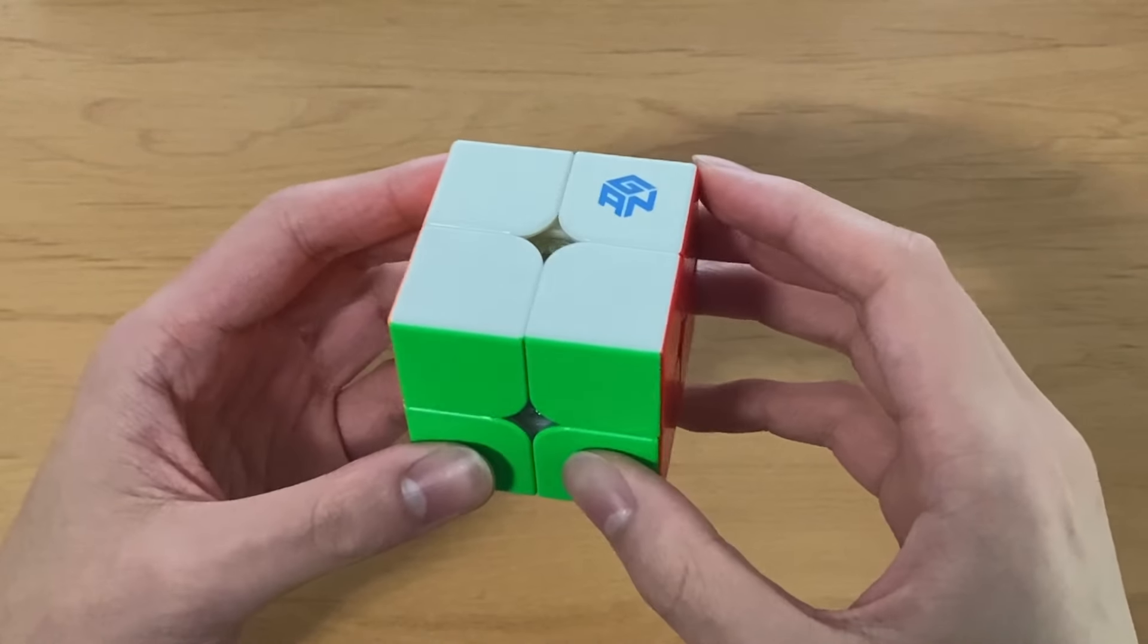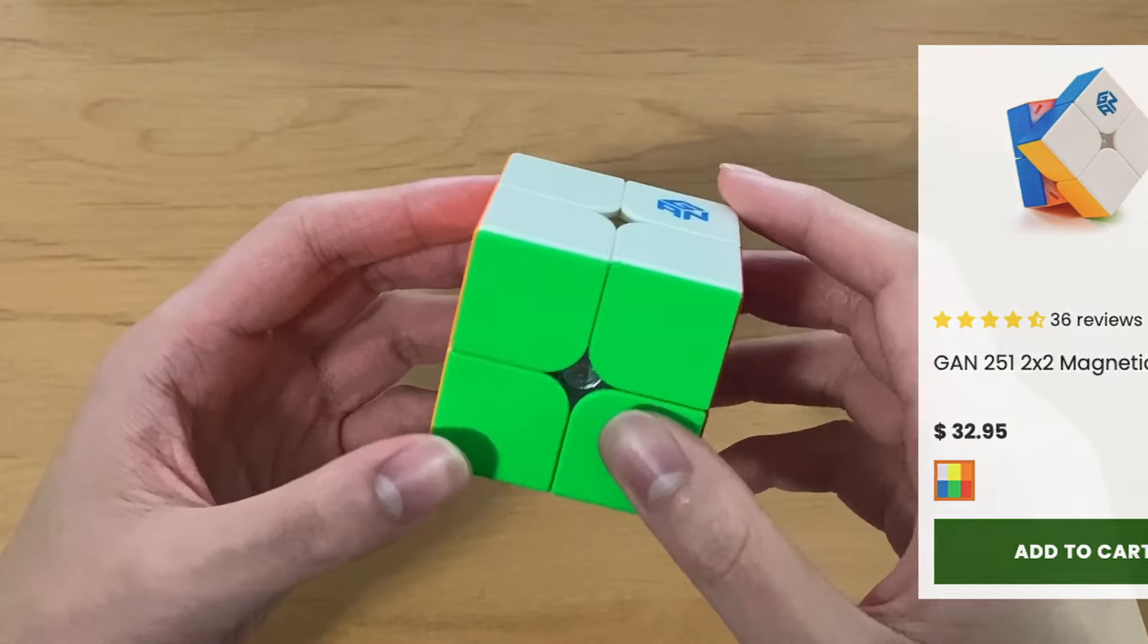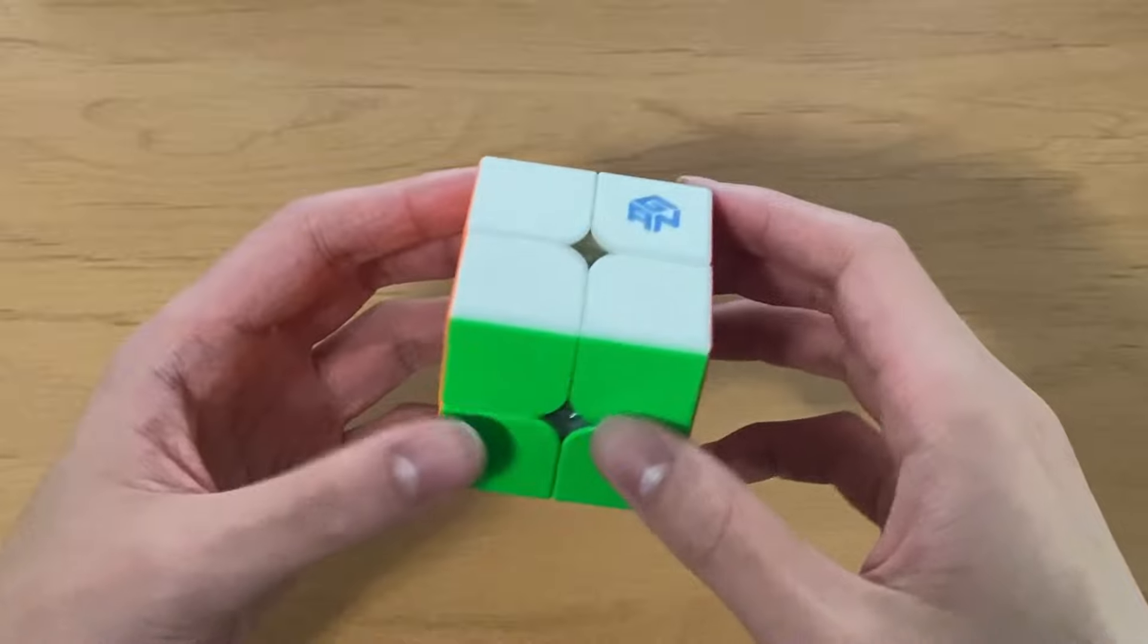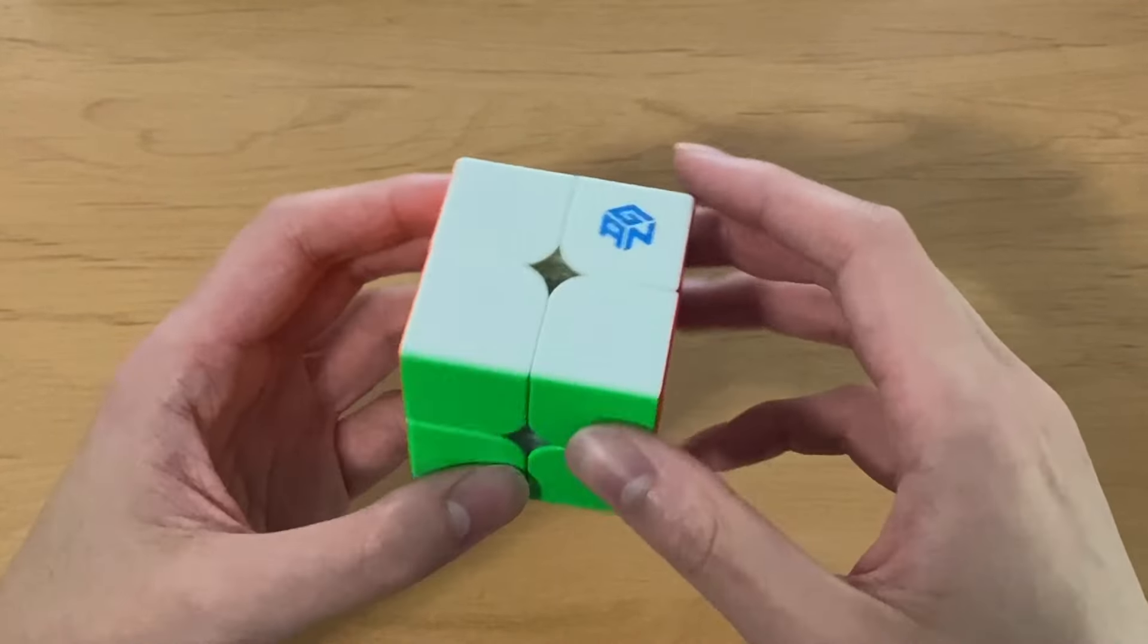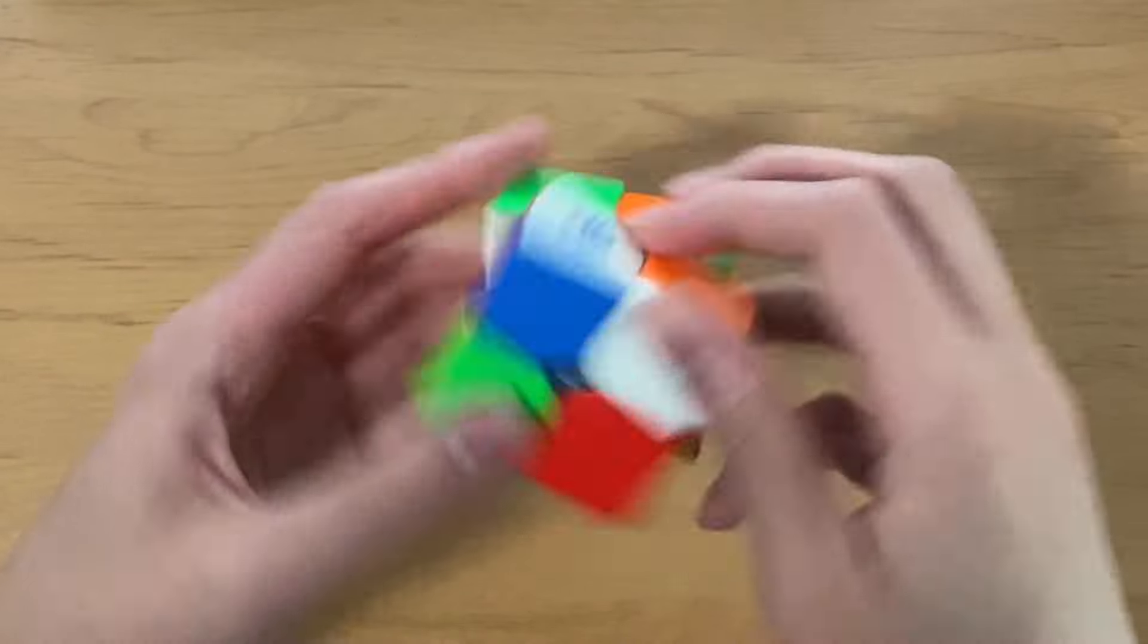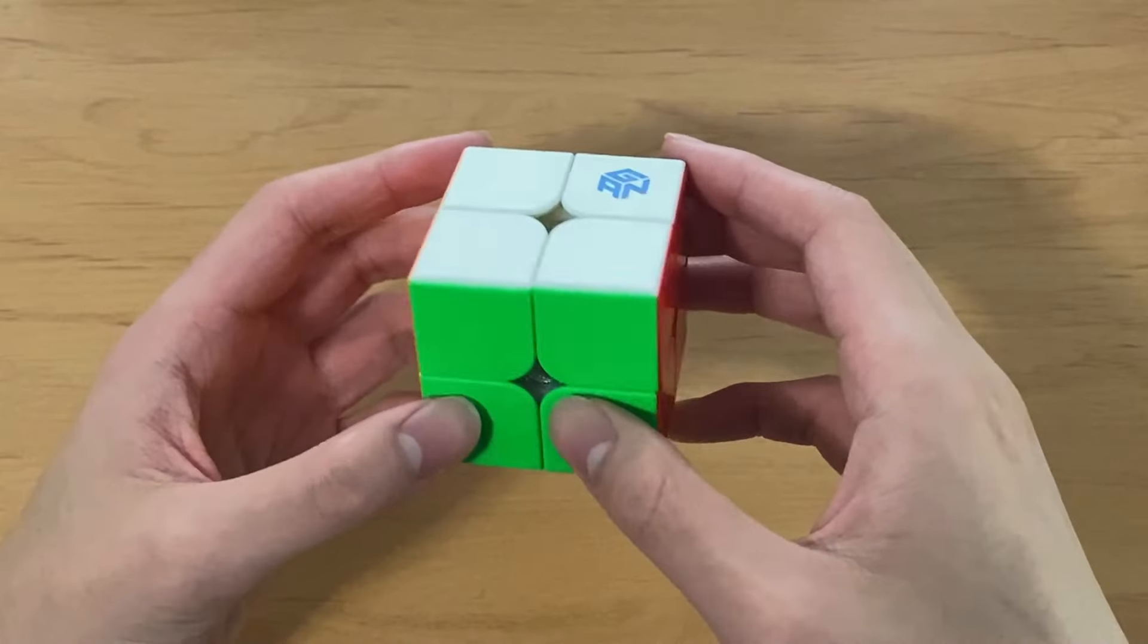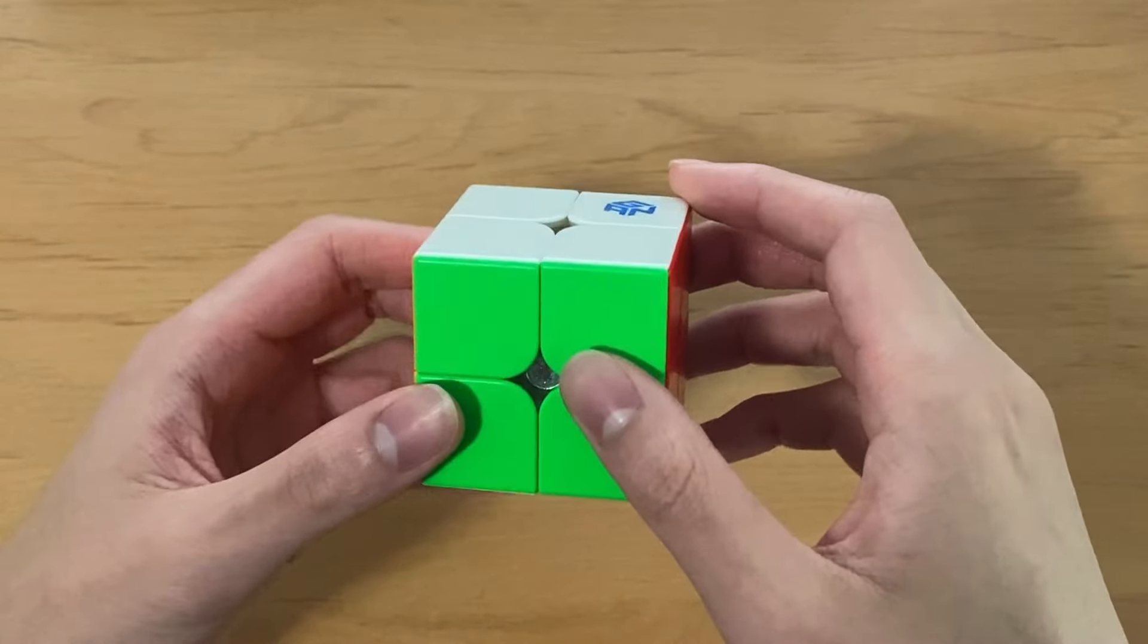Moving on to 2x2, I use the GAN 251M Pro. This cube is the top choice for many world-class solvers, and I can definitely see why. The turning is extremely smooth and fluid, and it's super fun to solve on. It also has a very satisfying turning feel and extremely good performance. I got this cube pretty recently, so I haven't been able to try it out in comp yet, but from what I've seen it's really good, and I'm pretty excited to try this out in competition and see how it goes.